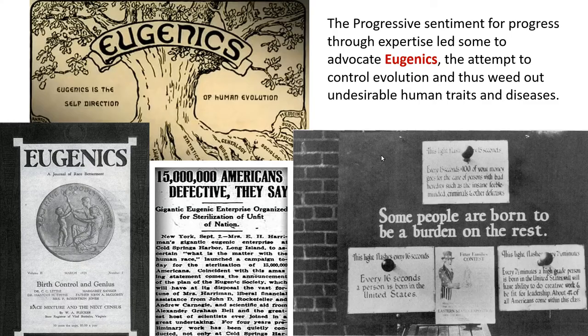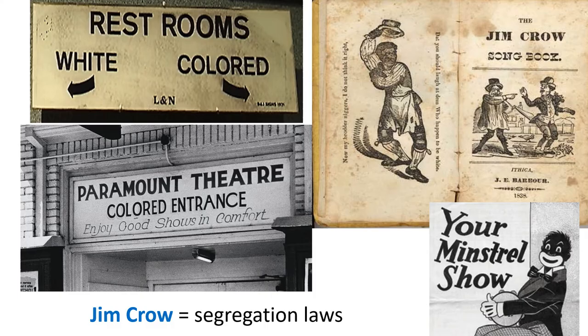The Progressive sentiment for progress through expertise led some reformers to advocate eugenics — the attempt to control evolution and thus weed out undesirable human traits and diseases. If you had some mental health issue or a genetic physical issue, they would keep you from reproducing. Eugenics is pretty ugly, and another ugly aspect of the Progressive Age was the status of African Americans. At this time, what were known as Jim Crow laws were predominant throughout the South — segregation laws.